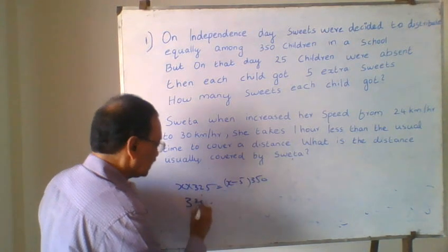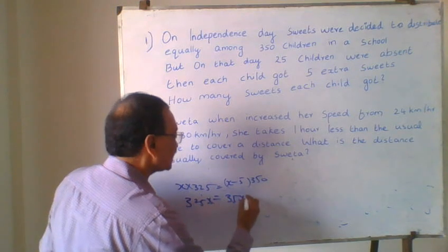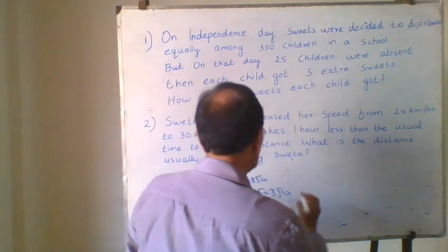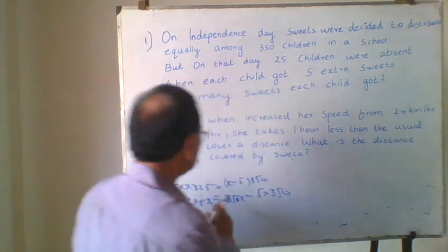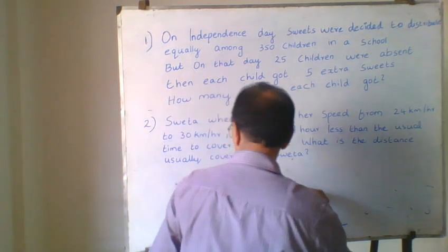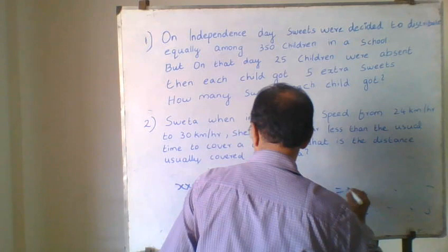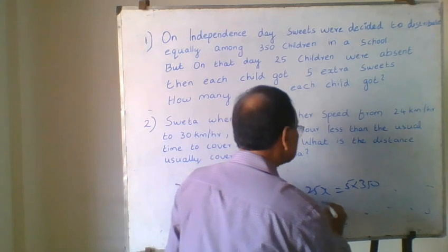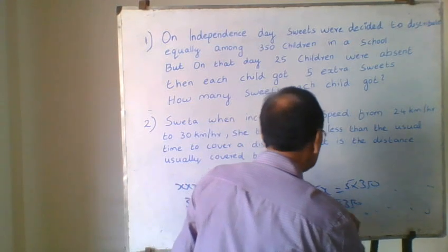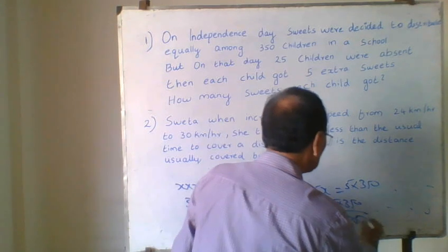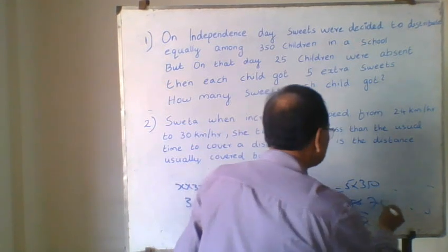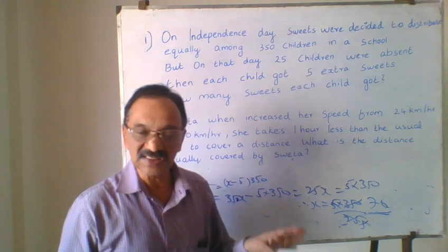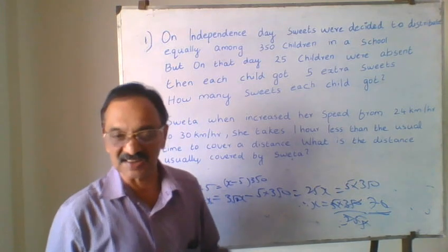So: 325x = 350x − 5 × 350. Therefore 25x = 5 × 350, so x = (5 × 350) / 25 = 70. Our answer is 70 sweets — each child got 70 sweets. That is the correct answer.